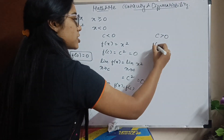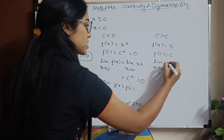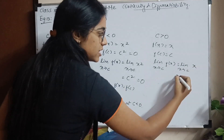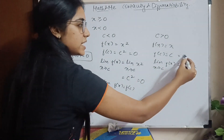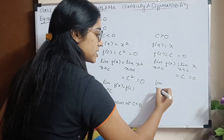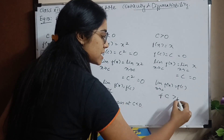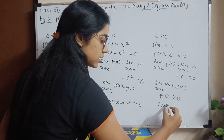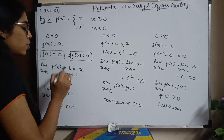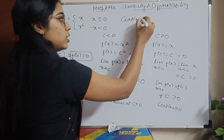For c greater than 0, the one and only condition is f of x equals x. So f of c is c. The limit x tends to c of f of x is limit x tends to c of x. Substituting c I will have c, and when c is 0 I will have 0. So limit x tends to c of f of x equals f of c for all values where c is greater than 0 — it is continuous. At 0, c less than 0, and c greater than 0 it is continuous everywhere — in the whole real plane, for all real numbers.